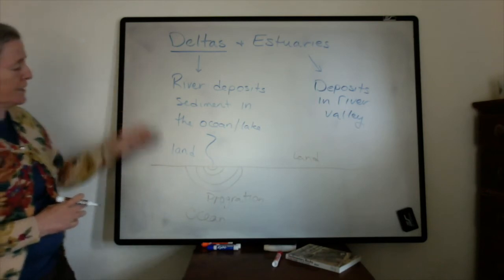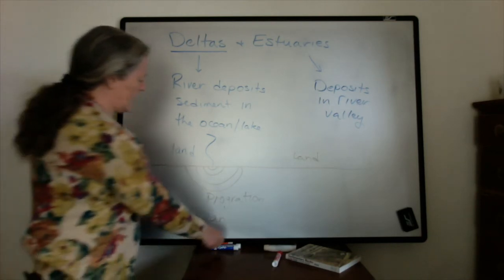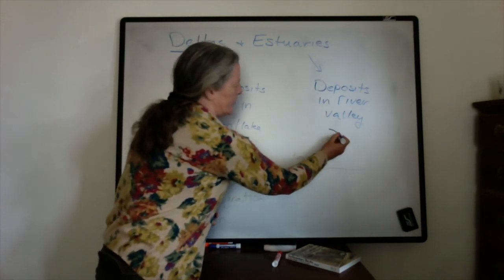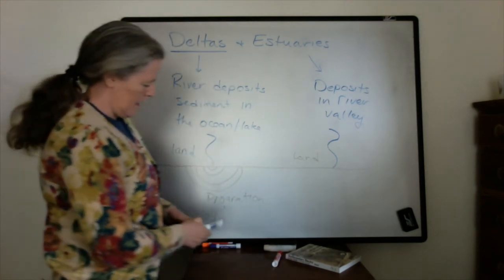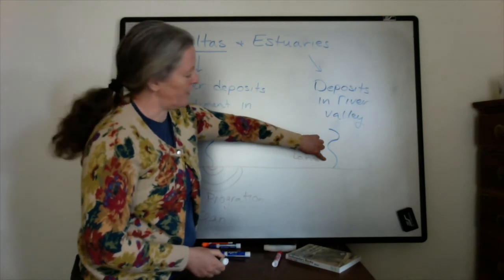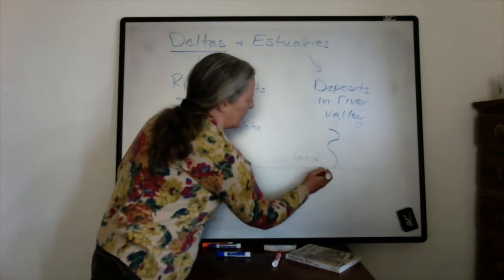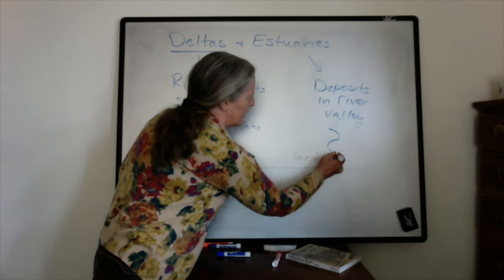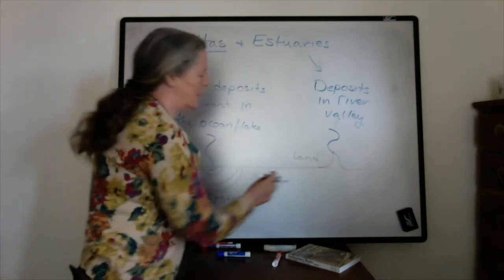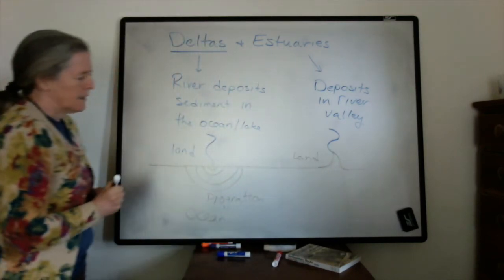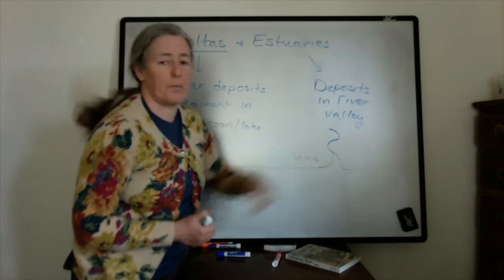The term delta comes from the triangular shape that the rivers build out through time. In contrast, a river in an estuary comes to the shoreline but either does not contain very much sediment, or that sediment is transported away from the shoreline very quickly, and the lake or ocean water floods up into the valley itself. So with an estuary, the shoreline goes inward and up that particular valley.